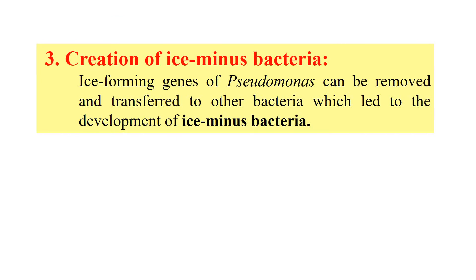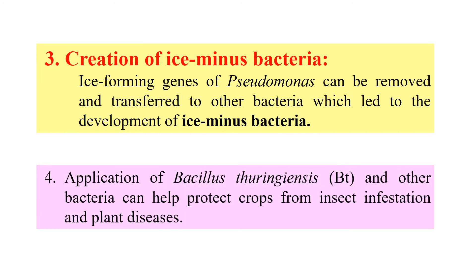Another example is the development of ice-minus bacteria. Pseudomonas strains generally cause frost damage by changing the surrounding water into ice crystals. We can develop ice-minus bacteria in which the ice-forming genes have been removed. When applied to crops, these ice-minus bacteria compete with the wild-type ice-forming bacteria and confer some frost resistance. Additionally, Bacillus thuringiensis (Bt) and other bacteria help protect crops from insect infestation and plant diseases, and with advanced genetic engineering, these bacteria may be manipulated for increased efficiency and expanded host range.